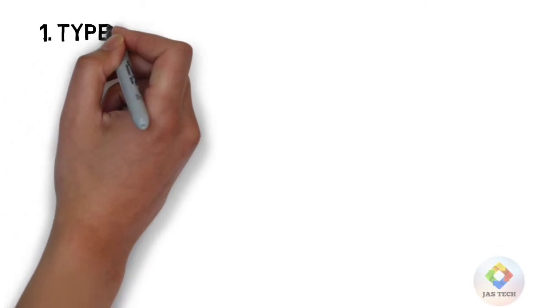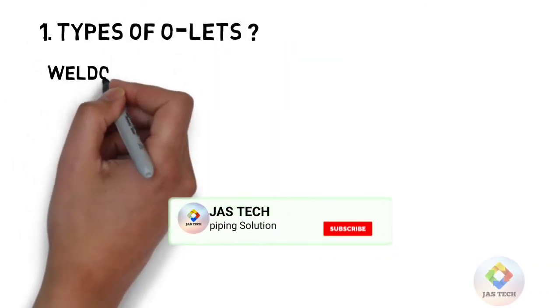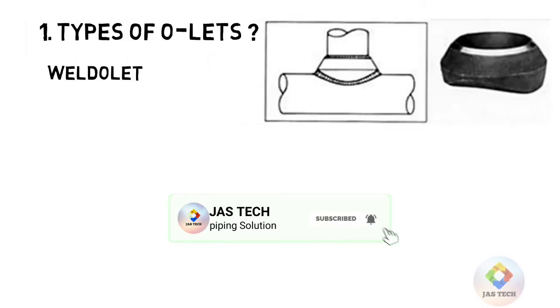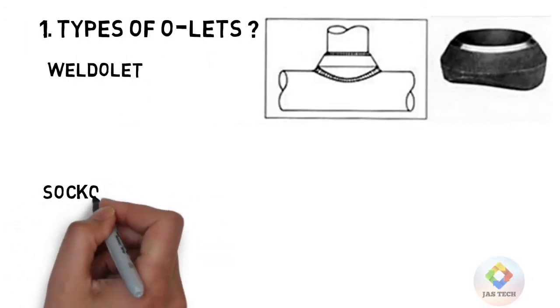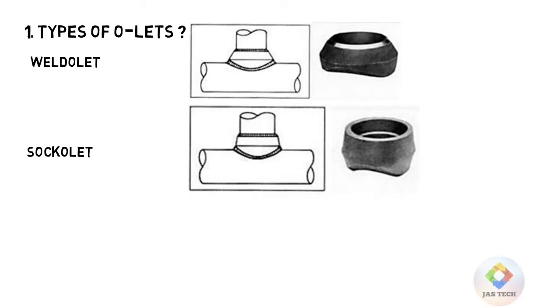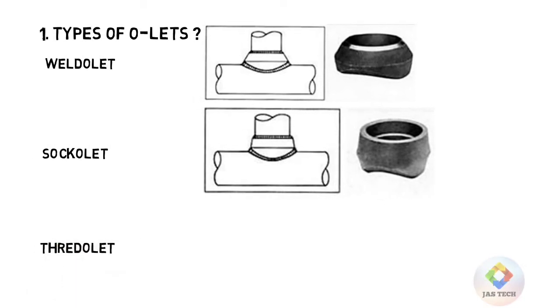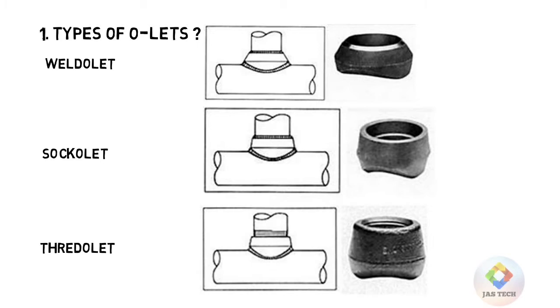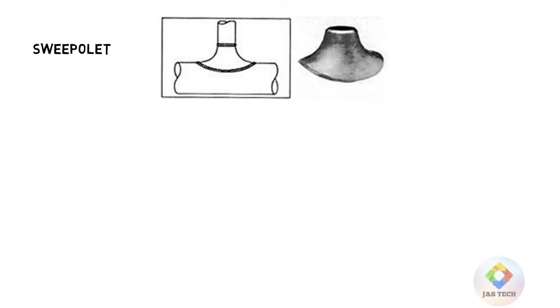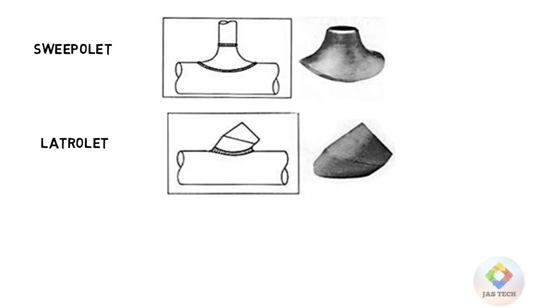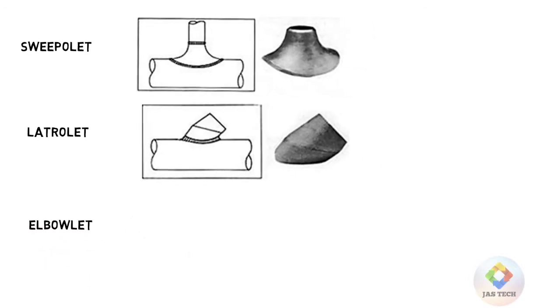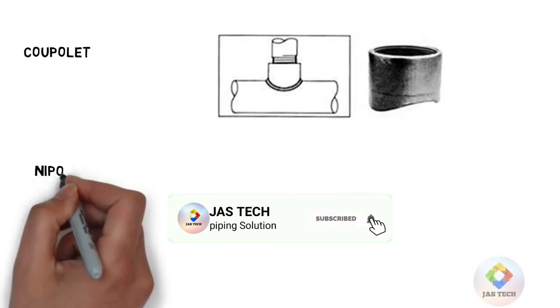Q1: Types of Olets. Weldolet, Sockolet, Threadolet, Sweepolet, Laterolet, Elbowlet, Capolet, and Nipolet.